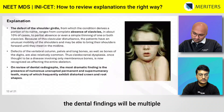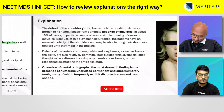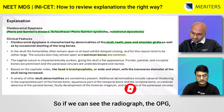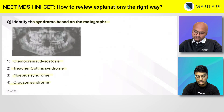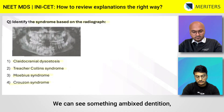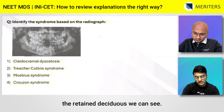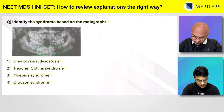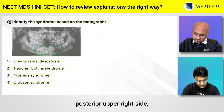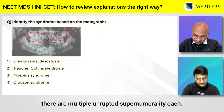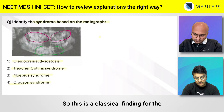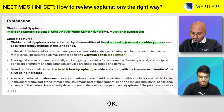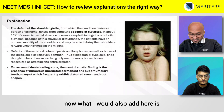For dental findings: multiple unerupted supernumerary teeth, retained deciduous dentition, and delayed eruption of permanent teeth. Looking at the OPG shown, we can see all these findings — a mixed condition with retained deciduous teeth, and in the lower anteriors and upper posterior right side, multiple unerupted supernumerary teeth are visible. This is a classical finding for cleidocranial dysplasia.